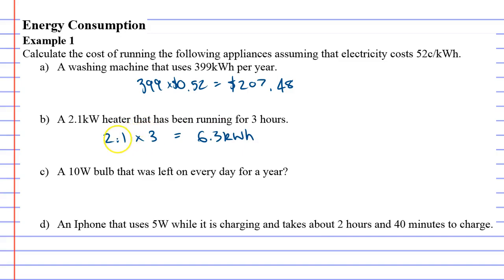You've got to multiply the kilowatts by the number of hours it was used. Now we can take the 6.3 and times it by the amount, which is 0.52 dollars. So a heater that's been running for three hours would cost about $3.28, correct to two decimal places.